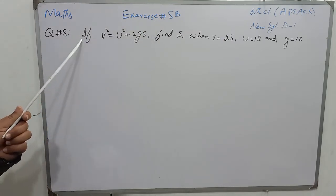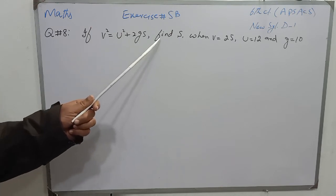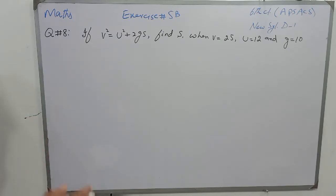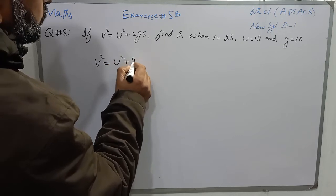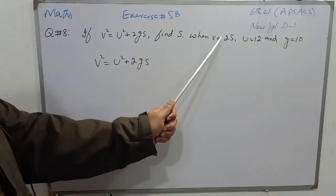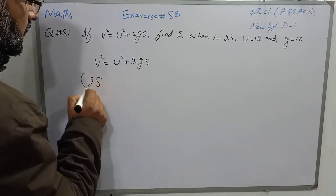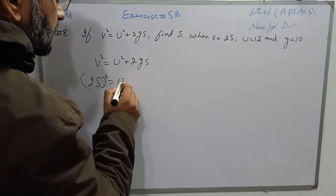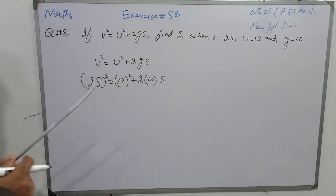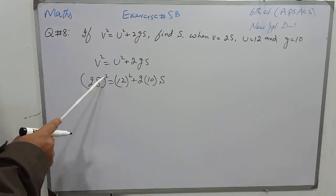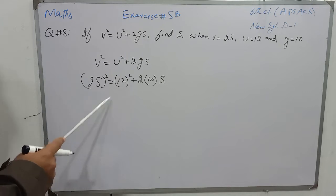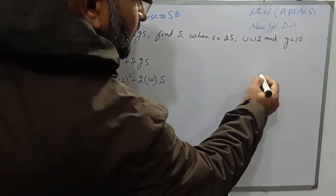Question number 8 of the same exercise is: if v squared is equal to u squared plus 2gs, then find s when v is 25, u is 12, and g is 10. First I will write the formula: v squared is equal to u squared plus 2gs. Now I will replace the values of v, u, and g, and s we have to find. In place of v I will write 25, its square, is equal to 12 squared plus 2 into 10 into s.